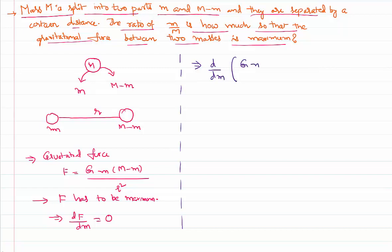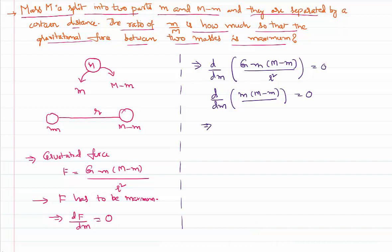Taking that into consideration, d by dm of G times m times (M minus m) divided by r squared has to be equal to zero. Since G and r squared are not variables — they don't vary with mass — we need d by dm of capital M times small m minus small m squared to equal zero.